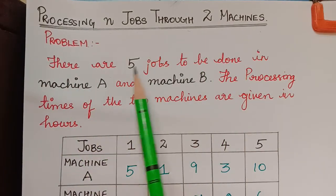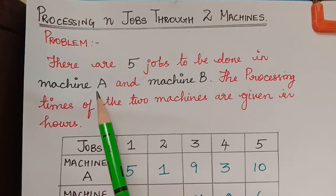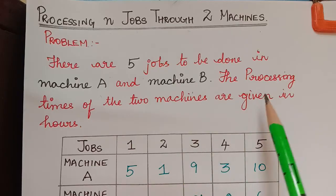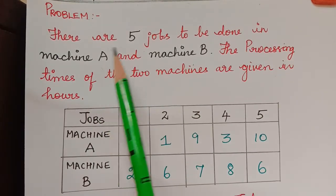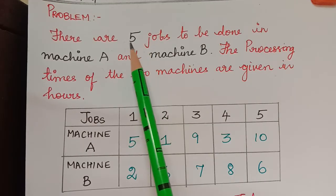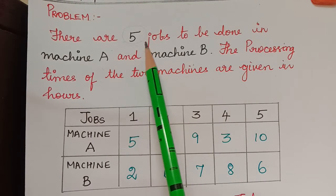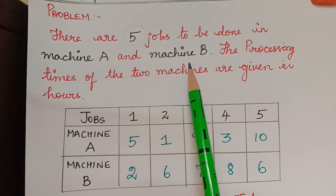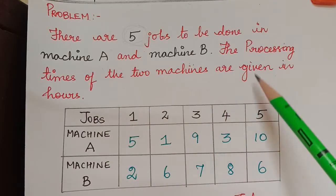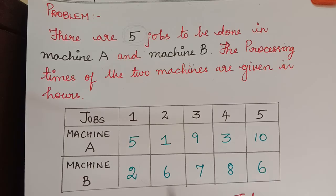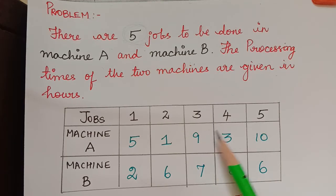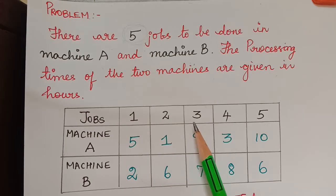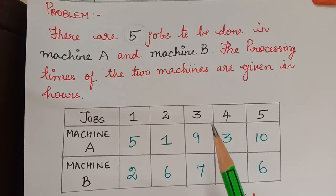Problem: there are 5 jobs to be done in machine A and machine B. The processing times of the two machines are given in hours. We will be dealing with problems where we have n number of jobs — here n is 5 — and two machines, so this is called a two machine problem. The main aim of a sequencing problem is to find the appropriate order of a series of jobs to be performed in minimum time.